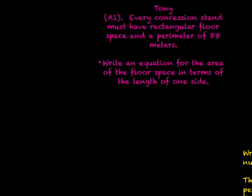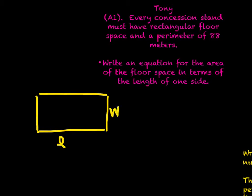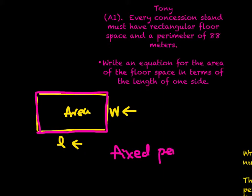Tony has these parameters: Every concession stand must have a rectangular floor space and a perimeter of 88 meters. We need to write an equation for the area of this floor space in terms of the length of one side. This is A number 1. Your job will be to do A number 2. We've already done problems like this where we look at a rectangle and figure out how to break it down instead of looking at it as length times width to find the area.